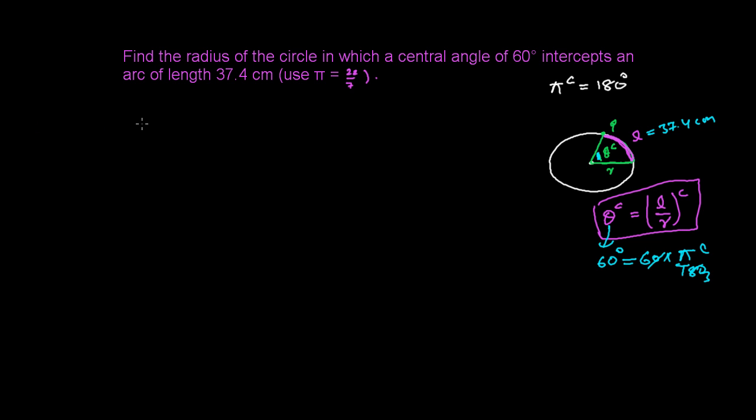Let's first write the given information. Arc length L is 37.4 cm. The central angle θ is 60 degrees, which equals π/3 radians. Now we need to find the radius.